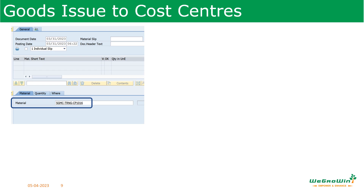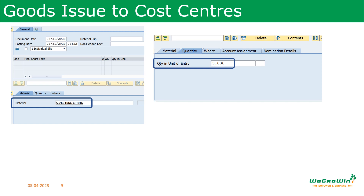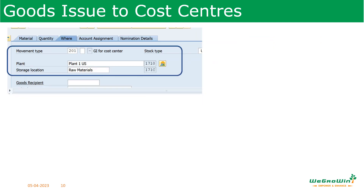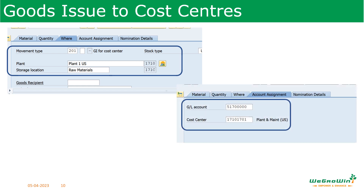Under the material tab, enter the material which has to be issued. Under the quantity tab, enter how much quantity has to be issued. In the WHERE tab, we see movement type 201, the plant in which the goods issue is happening, and from which store location the goods issue is happening. In the account assignment tab, the GL account and the cost center — which GL account will be affected and to which cost center the material is issued — are listed.